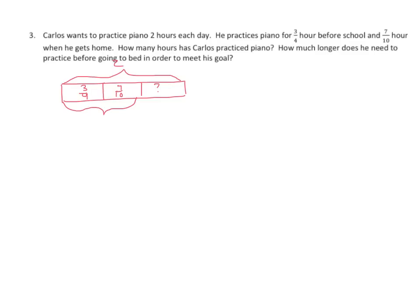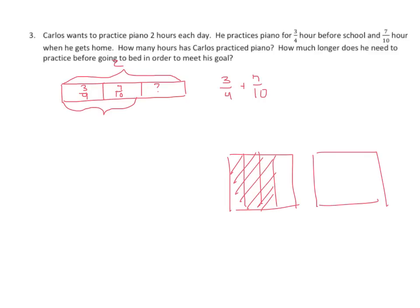Alright, we have 3 4ths plus 7 tenths. We can create our rectangular model. It's a little tedious when our denominators get so big. There's 3 4ths and 7 tenths. We've got a lot of horizontal lines. We'll add another there. Let's count to make sure we got that right. It makes the 10. It's going to be tough drawing that in that smaller rectangle. But okay, we've got 7 out of the 10 shaded in.